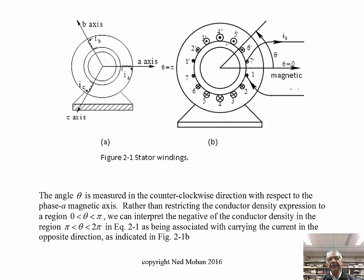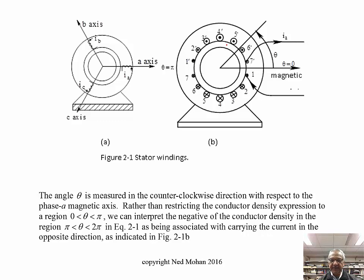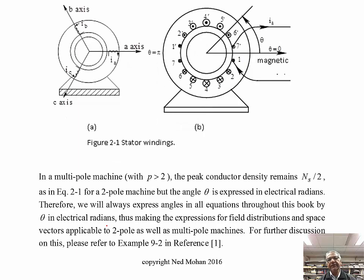The previous equation was valid for theta from zero to pi, but we'll let it go from zero to two pi by noting that the current is in the opposite direction when you exceed the angle of pi. Beyond pi, sine theta is negative, but that is accounted for by the fact that the current is in the opposite direction. So we'll assume that equation applies to both zero to pi and pi to two pi. Our description was for a two-pole machine, but this analysis can be extended to a p-pole machine where p may be greater than two.